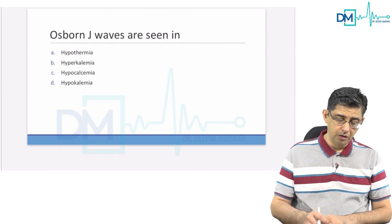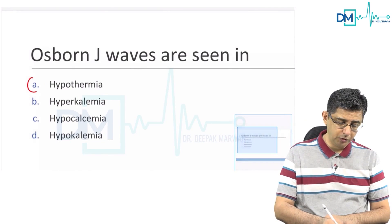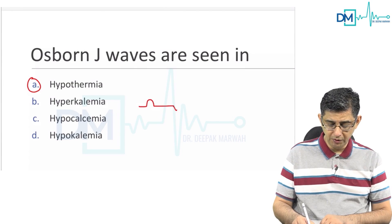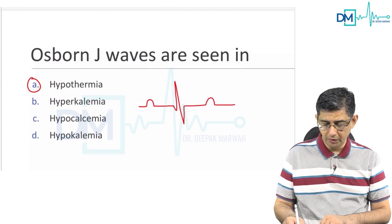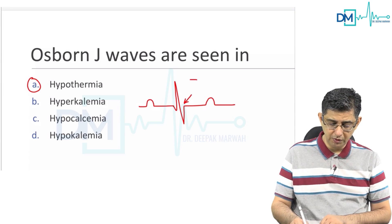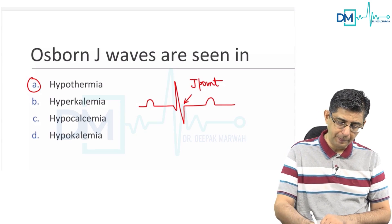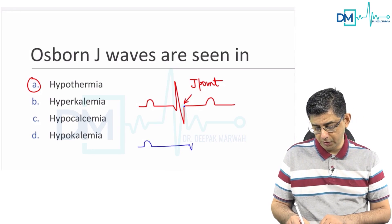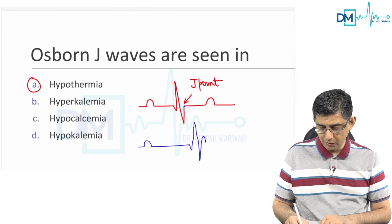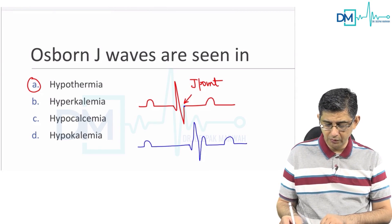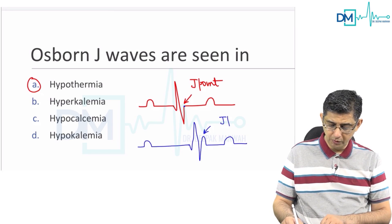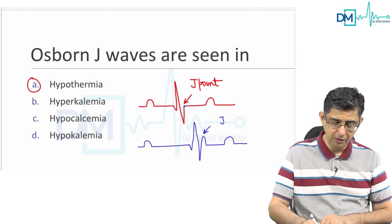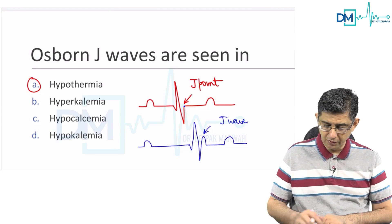Osborne J waves are encountered in hypothermia. These waves are usually at the starting of the J point. The end of the S wave is called the J point, which is the isoelectric point. In patients of hypothermia, the heart becomes slower, so the PR interval is increased, the QRS complex is broader, and you can see a convexity at the starting of the ST segment. This, along with the prolonged PR and a broad QRS, is called the J wave, also known as the Osborne wave.